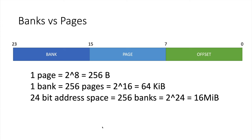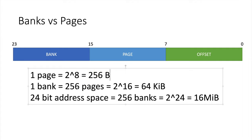Before we go any further I'd like to talk about some vocabulary — mainly what is a bank and what is a page of memory. If you think about a 24-bit address that the CPU can manipulate, you can split it into three 8-bit sections. The least significant 8 bits determine the offset, and that is a page — 256 bytes. You can have 256 pages because the page number is also 8 bits, and that makes a bank of 64 kilobytes. And for the full 24 bits there are 256 banks, giving a total addressable space of 16 megabytes.